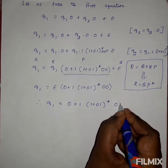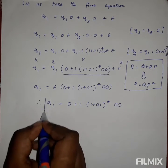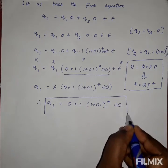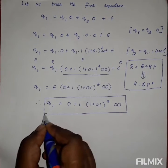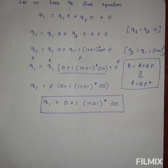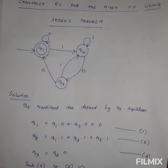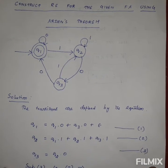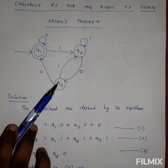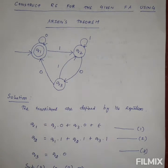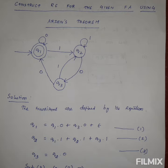So the obtained regular expression for the given finite automata is (0 + 1·(1+01)*·00)*. We have now finished the three methods used for the conversion of a given finite automata into a regular expression.